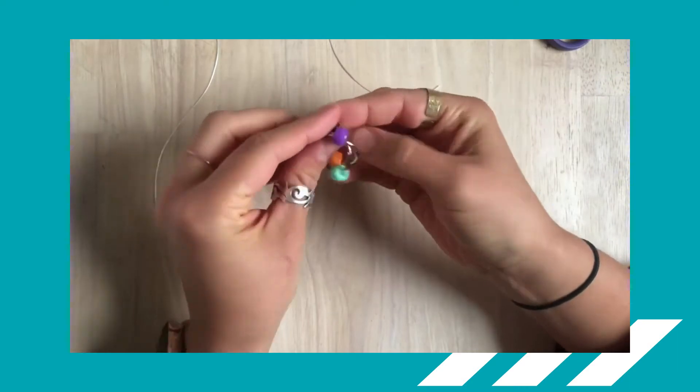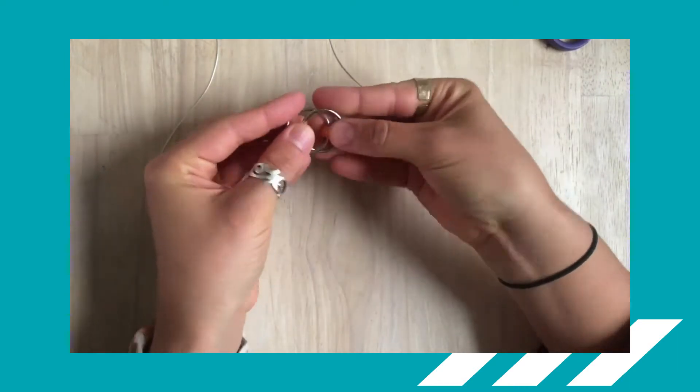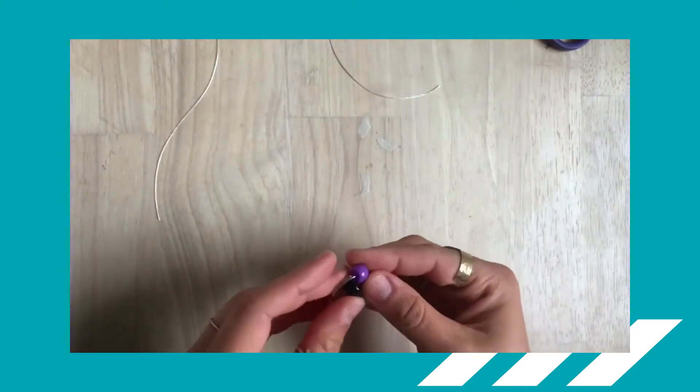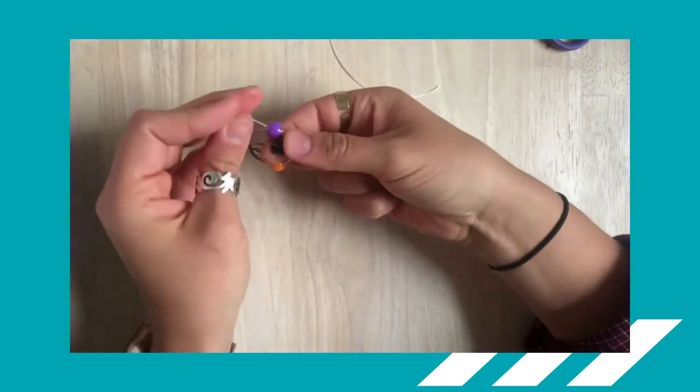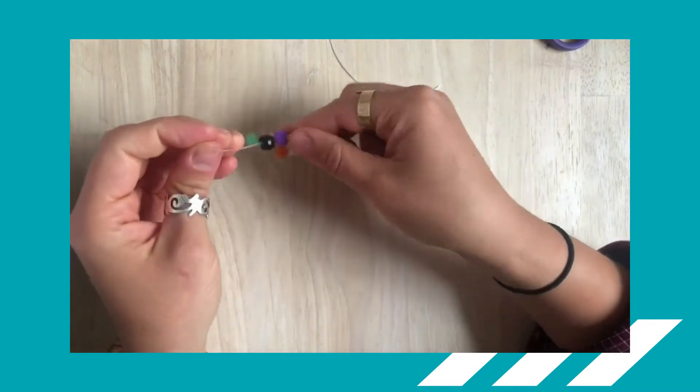Then you'll line up two of your pony beads next to each other like this. Once you have that, you'll tie those pony beads together with the string that you just cut.